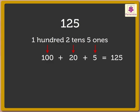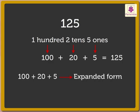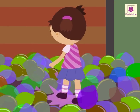Here, 100 plus 20 plus 5 is called the expanded form, and the number 125 is called the standard form.